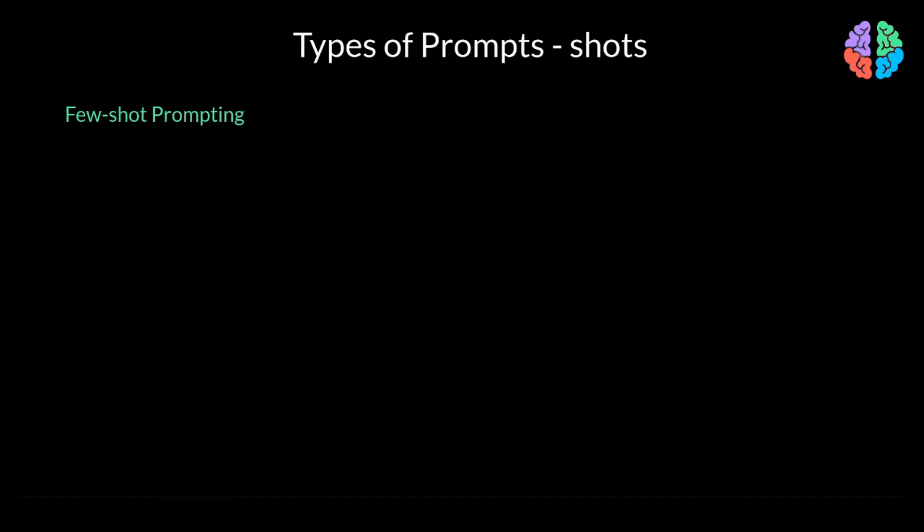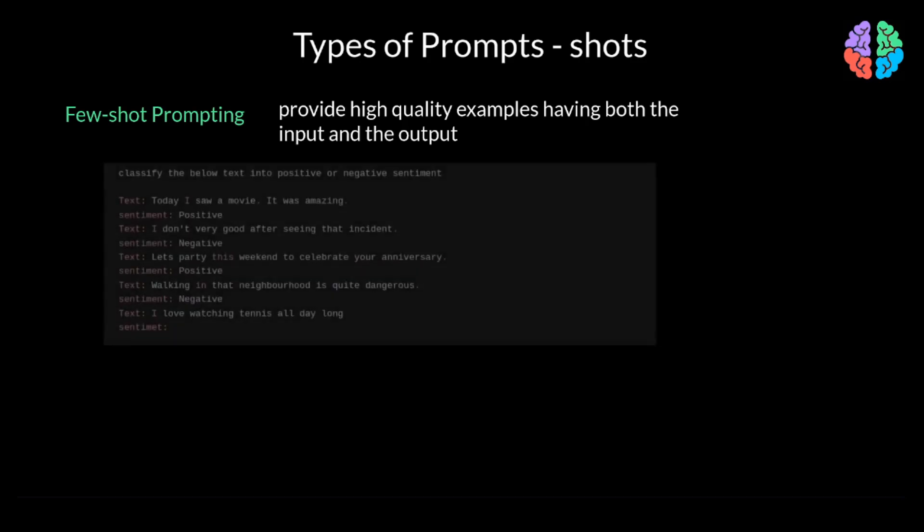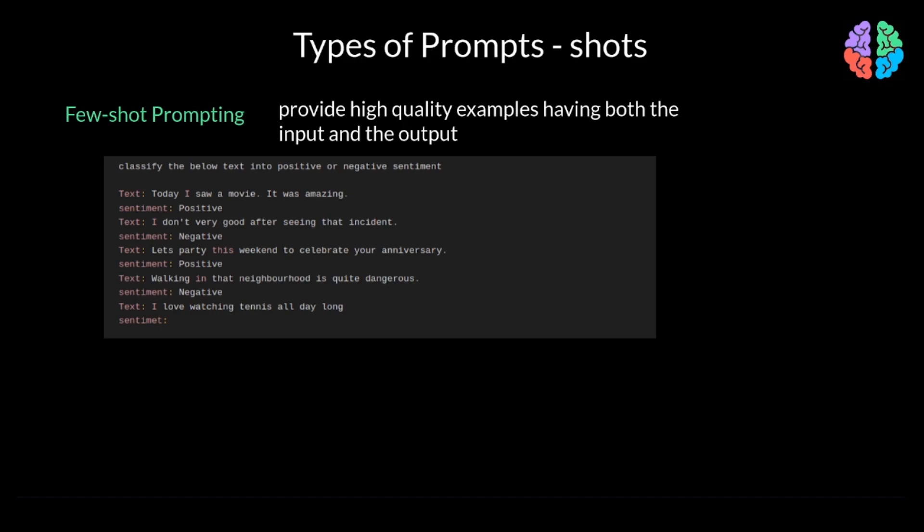In the prompting world, it's called few-shot prompting. We provide high-quality examples having both the input and the output of the task. This way, the model understands what you are after and so responds far better. Expanding on our example, if you want to know the sentiment of a passage, instead of just asking what is the sentiment of the passage, I can provide a few examples covering the possible classes in the output. In this case, positive and negative.